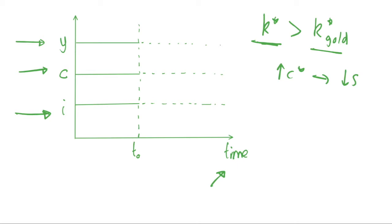At time t₀, let's imagine we implement a policy that reduces the savings rate. As I said, this will immediately increase consumption, so we have a shock to consumption, and then it tails away until it reaches the new steady state, which has higher consumption than the initial steady state.